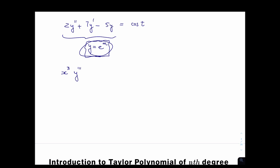For example, x³y''' + 7x²y'' - 8xy' + 3y = 0 would be a Cauchy-Euler equation. You'd write a characteristic equation for it and write the general solution as y = x^m. We saw that all solutions could be written in terms of polynomials and also logarithms.